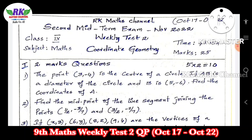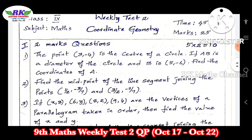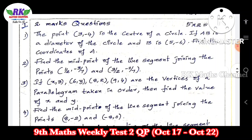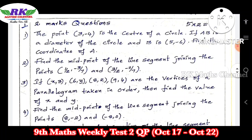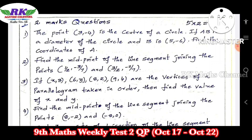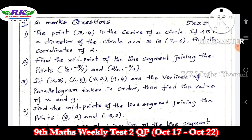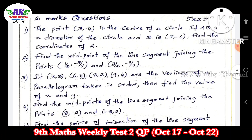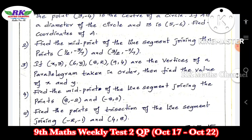We have the two-mark section. The two-mark questions — five questions, five times two marks, equals ten marks. The first question is important: find the center coordinates using two given coordinates A and B, using the midpoint concept. The midpoint concept is used to find the midpoint.